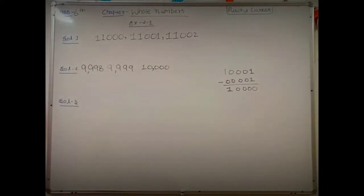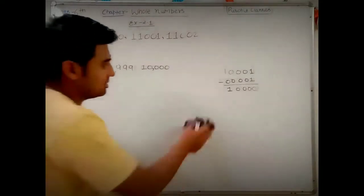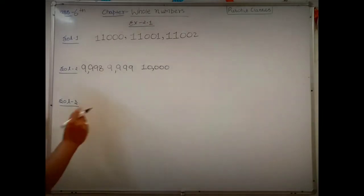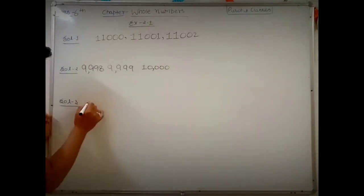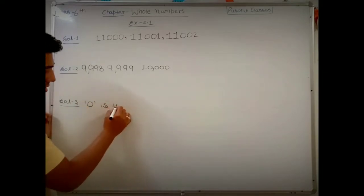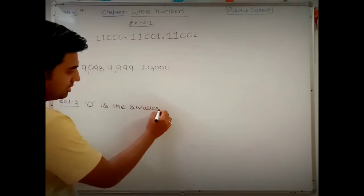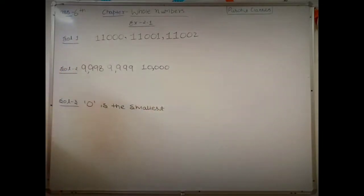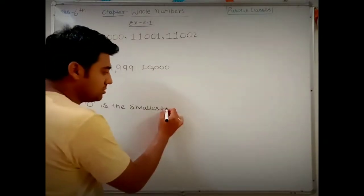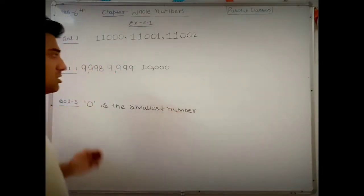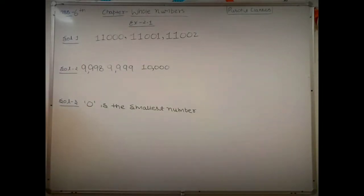Question 3 is written as a note: which is the smallest whole number? The correct answer is zero — zero is the smallest whole number. At the same time, the smallest natural number is one. One is the smallest natural number.